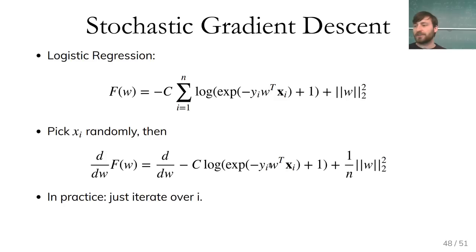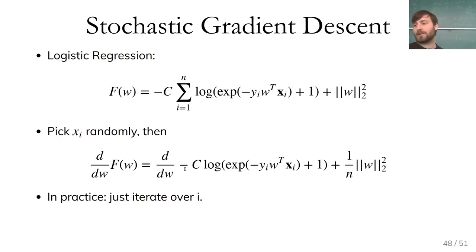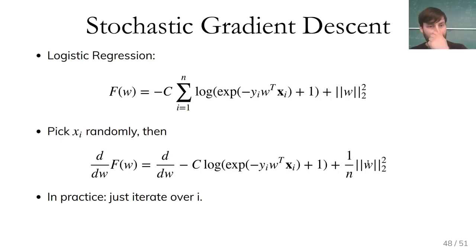In scikit-learn, there's SGDClassifier and SGDRegressor. Both are linear models implementing logistic regression, linear SVMs, ridge regression, lasso, and elastic net — you set a loss and a regularizer and learn using stochastic gradient descent. This can be tricky because you need to tune the learning rate, and on small datasets these are slower; on very large datasets they're usually faster. These also allow online learning via the partial_fit method: you load some data, do stochastic gradient steps, load more data, and continue. This is useful when you can't load the full dataset into memory or when data streams in.